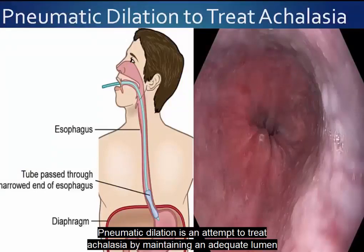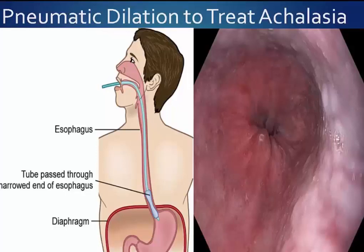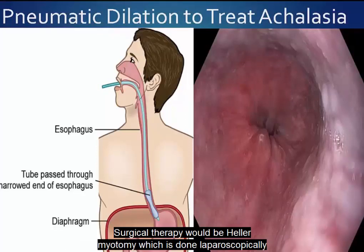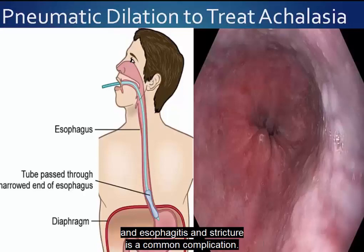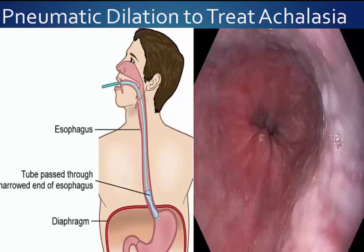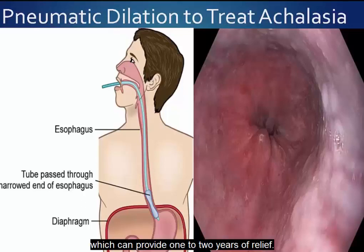Pneumatic dilation is an attempt to treat achalasia by maintaining an adequate lumen and decreasing lower esophageal sphincter tone. Surgical therapy would be Heller myotomy, which is done laparoscopically, where the lower esophageal sphincter is surgically disrupted. Because GERD, esophagitis, and stricture are common complications, the patient often has anti-reflux surgery performed at the same time. Drug therapy includes smooth muscle relaxants and botulinum toxin injections, which can provide one to two years of relief.